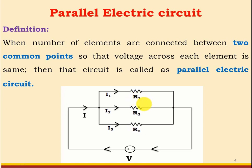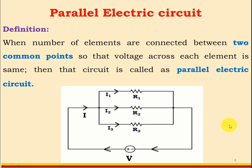One more important thing is that a parallel electric circuit is applicable not only for resistors but also for other elements like inductors, capacitors, etc. We can have a DC parallel circuit if we have a DC voltage source, or we can have an AC parallel circuit if we have an AC voltage source.